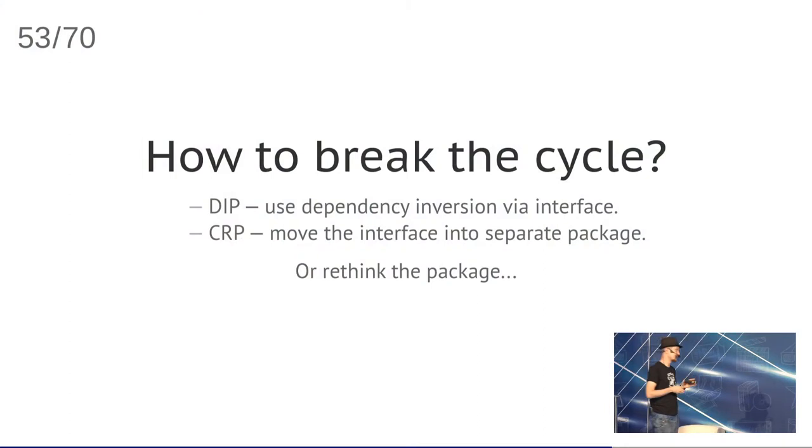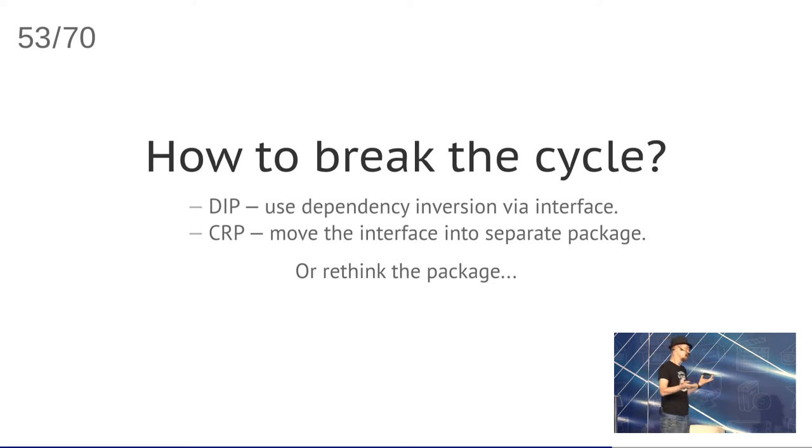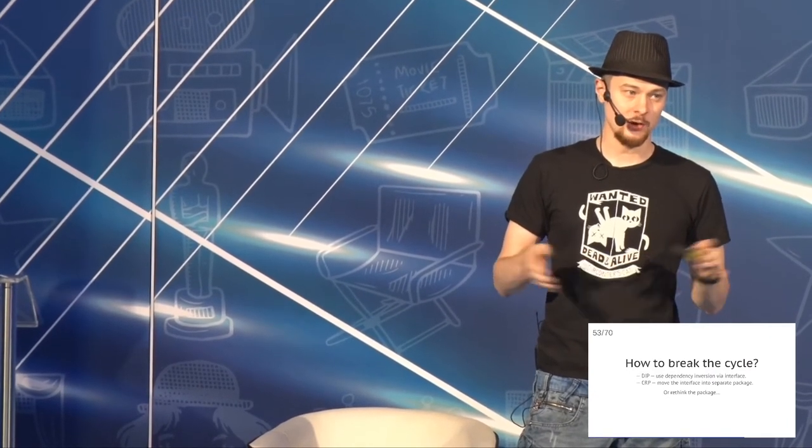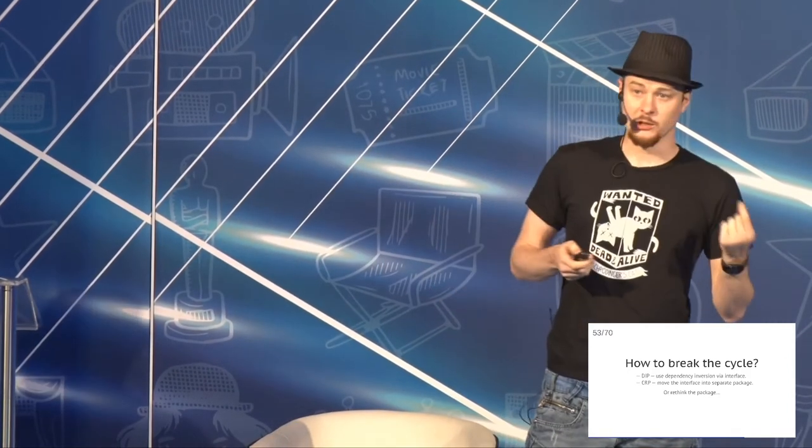How to break the cycle? First, there is the Dependency Inversion Principle for classes — you introduce an interface and rely on it. For packages, there's CRP — that's about moving the interface into a dedicated package. At first that looks terrible — a whole package just for an interface — but it's actually not bad. If you look at PHP-FIG interfaces like PSR-7, you'll see it's actually okay and useful. It leads to interoperability — the ability to swap out a package for something else. Alternatively, you may just rethink the whole package design.